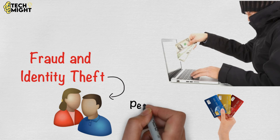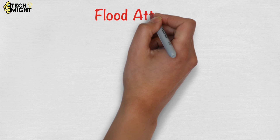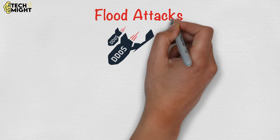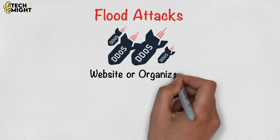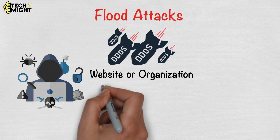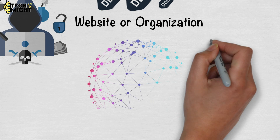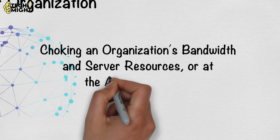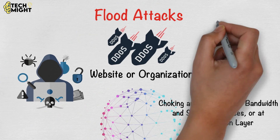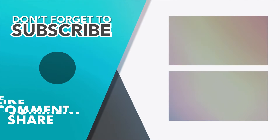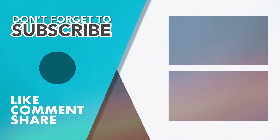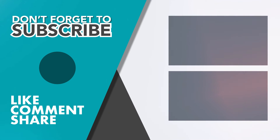Flood attacks: most modern flood attacks are distributed denial of service attacks which leverage a botnet to hit a website or organization with massive amounts of fake traffic. Flood attacks can be targeted at the network layer, choking an organization's bandwidth and server resources, or at the application layer, bringing down a database or email server, for example. That's all for today. Don't forget to subscribe, like, comment, and share, and do follow us on Instagram. Thanks.